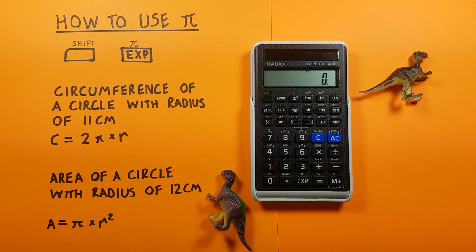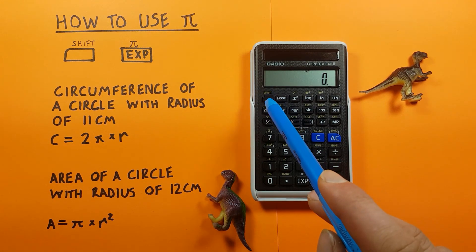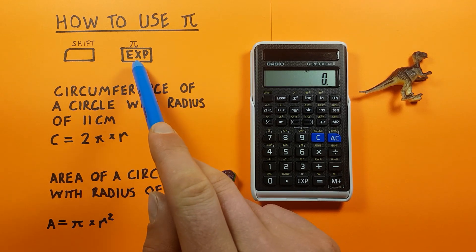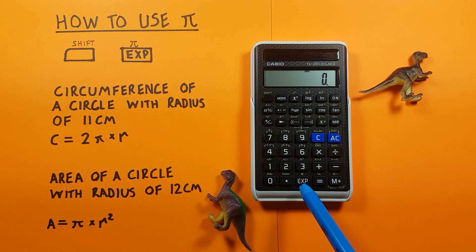To do this we'll need to use the shift key that looks like this located here in the top left corner, as well as the exp key with a shift function of Pi that looks like this located down here at the bottom.